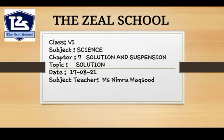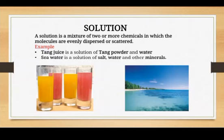This is chapter number seven: Solution and Suspension. The very first question is: what is a solution? A solution is a mixture of two or more chemicals in which the molecules are evenly dispersed or scattered. Evenly dispersed or scattered means that you make a solution which you can see easily or which is very clear.